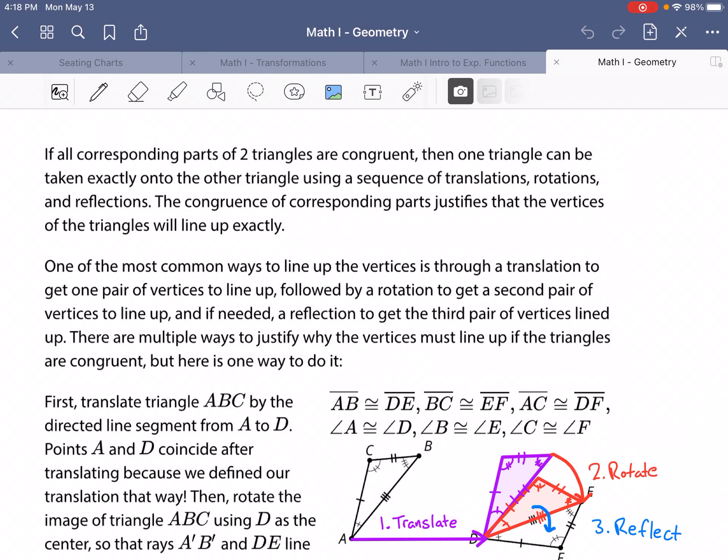So if all corresponding parts of two triangles are congruent, then one triangle can be taken exactly onto the other triangle using a sequence of translations, rotations, and reflections. The congruence of corresponding parts justifies that the vertices of the triangles will line up exactly.